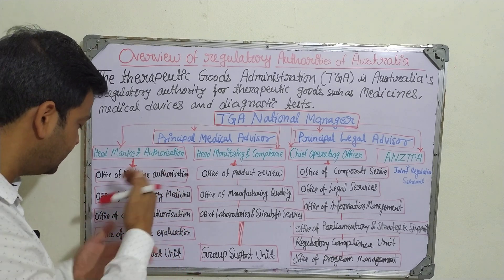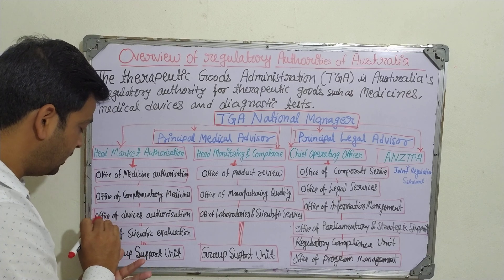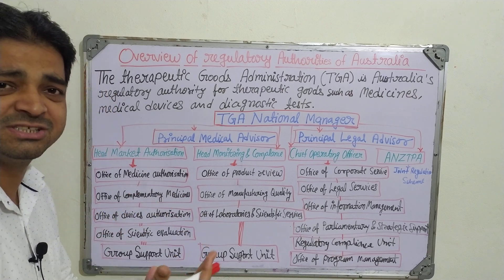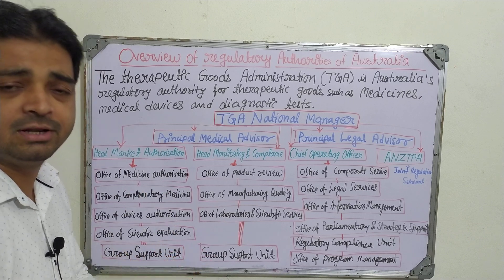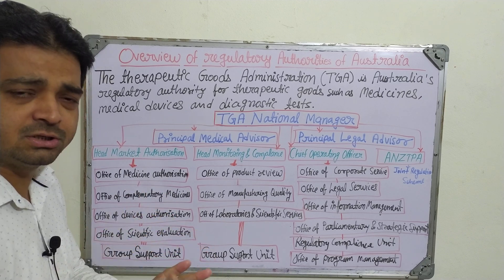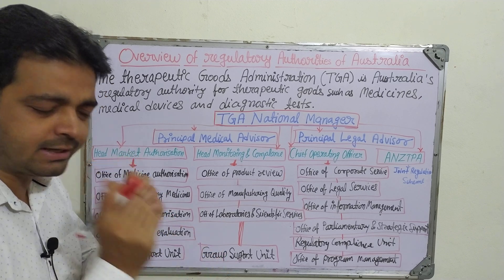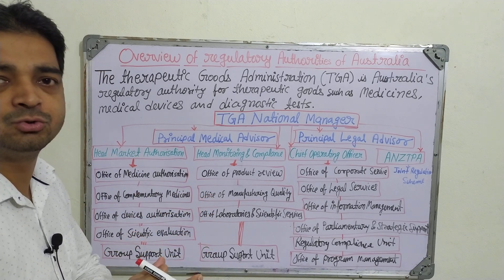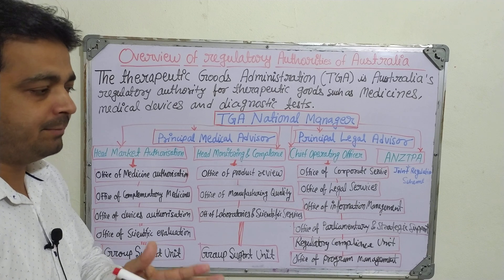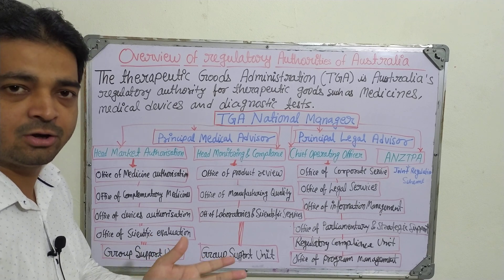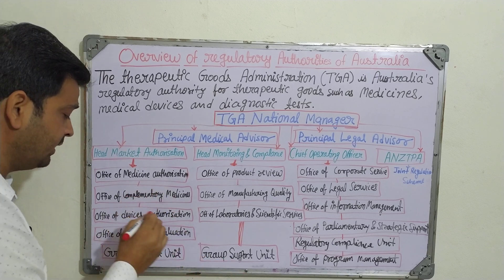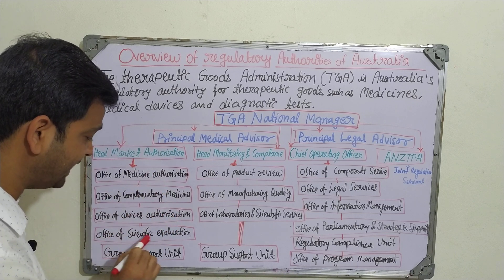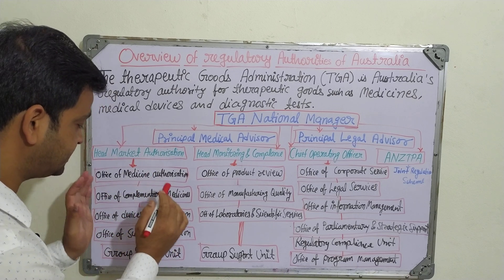The third office is the Office of Devices Authorization, which covers any medical equipment or machines — such as tablet punching machines, ampoule filling machines, cell diffusion bio analyzers, and other instruments used both in pharmaceutical industries and in the hospital sector.